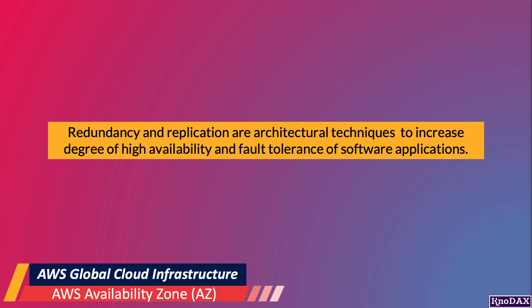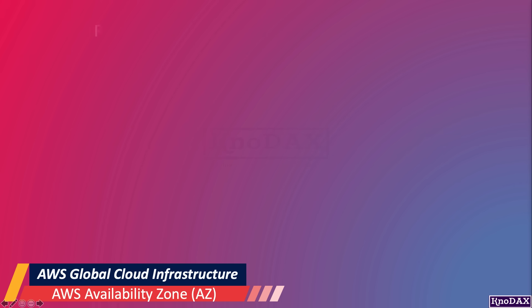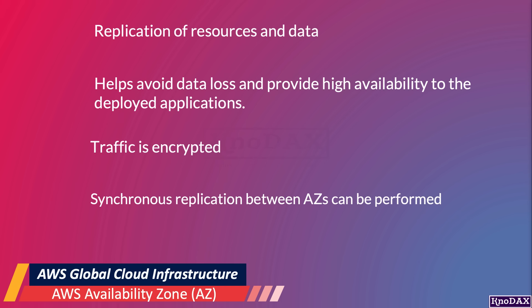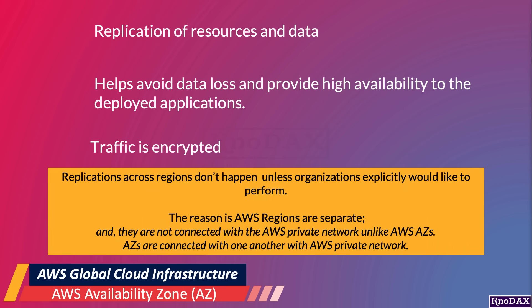Let's talk about Availability Zones from the solutions architecture perspective. Redundancy and replication are architectural techniques to increase software applications' high availability and fault tolerance. AWS allows replication of resources and data in multiple Availability Zones, which helps avoid data loss and provides high availability to deployed applications. All traffic between AZs is encrypted, and synchronous replication between AZs can be performed. However, replications across regions don't happen automatically unless organizations explicitly want to perform them, because AWS regions are separate and not connected with the AWS private network, unlike AWS AZs.